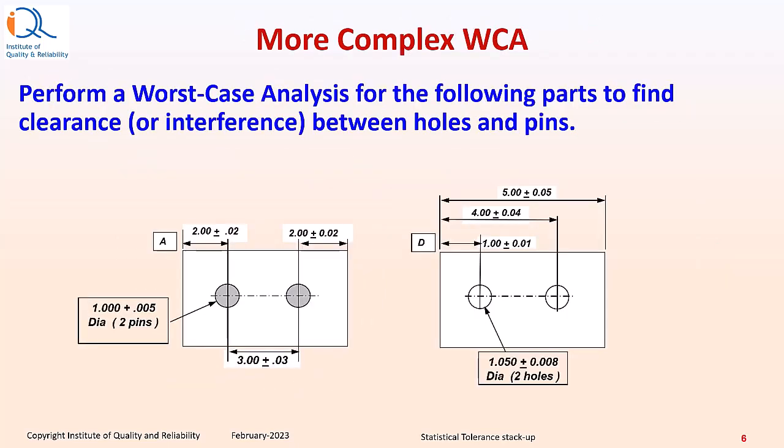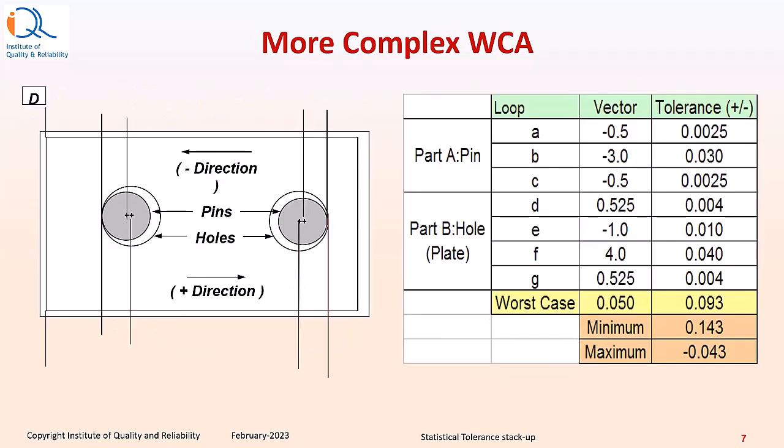Here is an example of more complex WCA. Perform a worst case analysis for the following part to find clearance or interference between holes and pins. The loop diagram will be slightly more complex compared to the previous case. So, we start with the radius of the pin on the right side that is A.